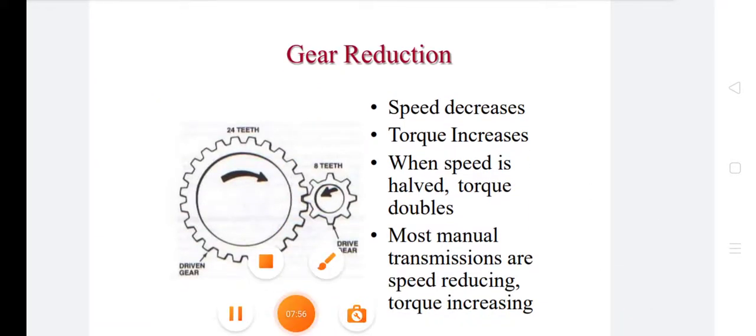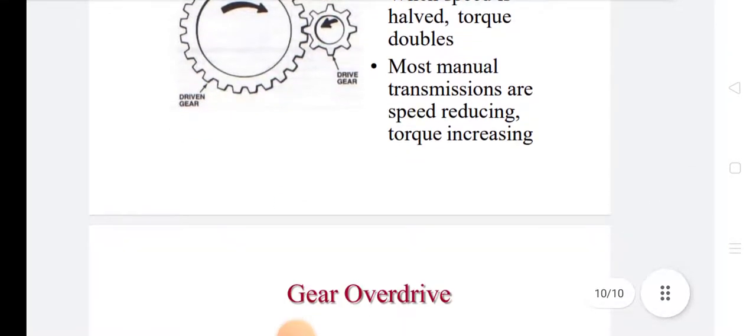Now we discuss about gear reduction. In gear reduction, speed decreases, torque increases. When speed is half, torque is double. Most manual transmissions are speed reducing and torque increasing.